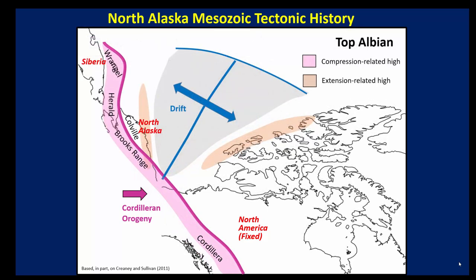Through the Cretaceous, Alaska continues its rotation to near its present position. During this drift phase, we see remnants of the rift shoulder, the foreland continues to be active, and we'll see the impact on sedimentation.